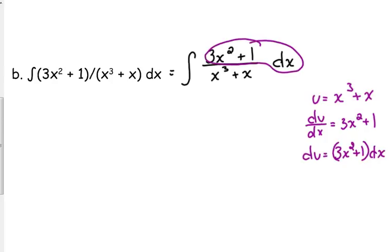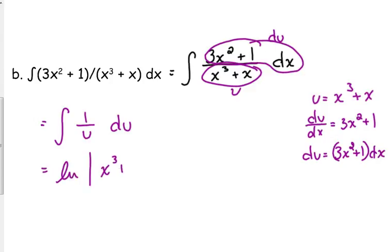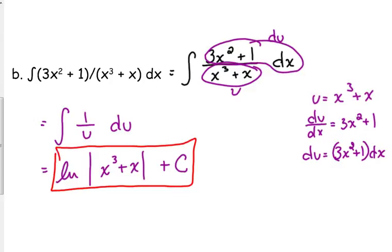So we've got this part taken care of. This part is our u. This part is our du. So we're looking at the integral of 1 over u du. The anti-derivative of 1 over u is the natural log of u, x cubed plus x, plus c, indefinite integration. Don't forget that. x cubed plus x can be negative, so we need to keep the absolute value bars.